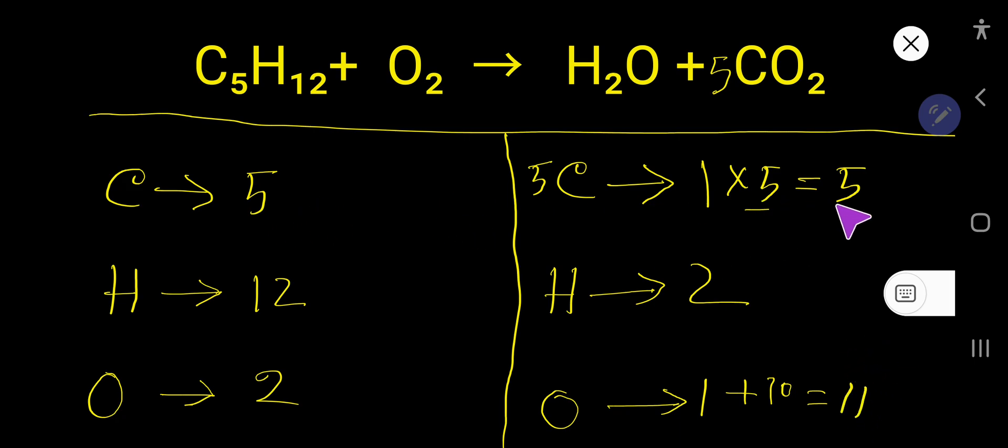Now carbon is balanced 5, 5, but hydrogen here 12, here 2. So to balance hydrogen, you can multiply here by 6, that gives us 12.